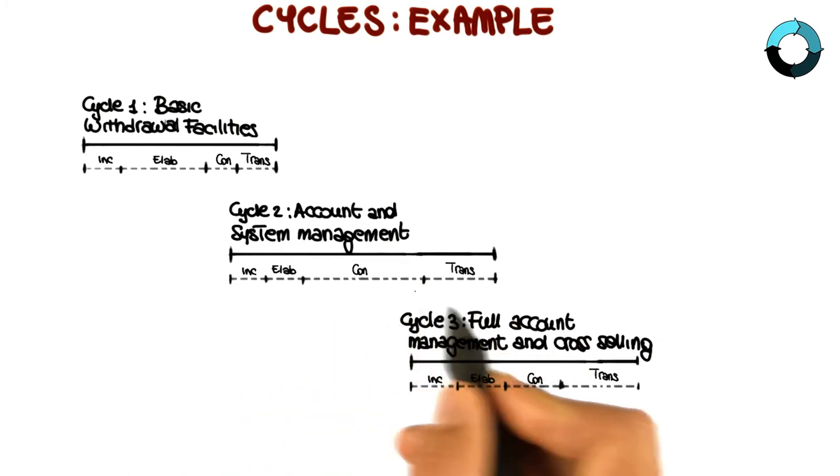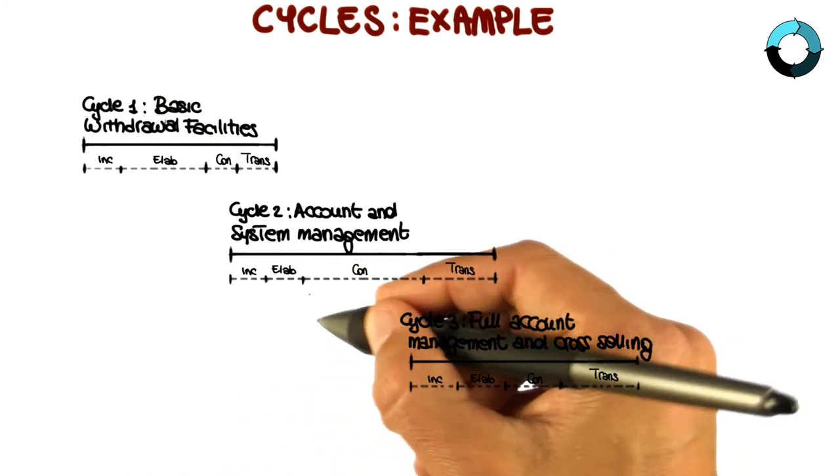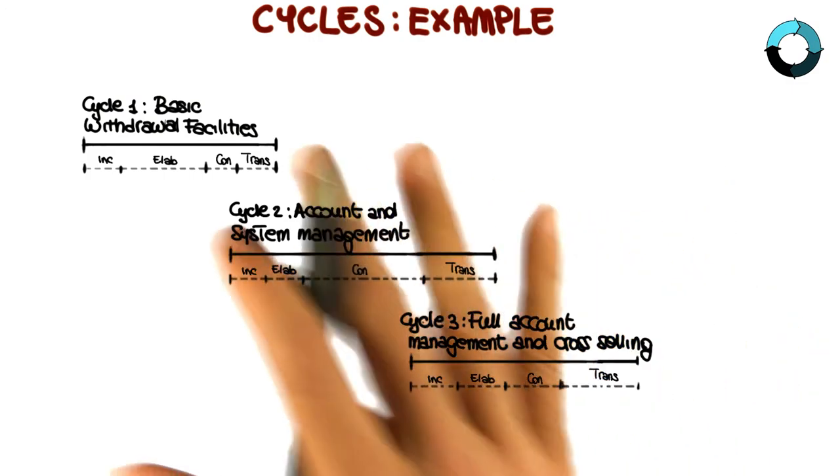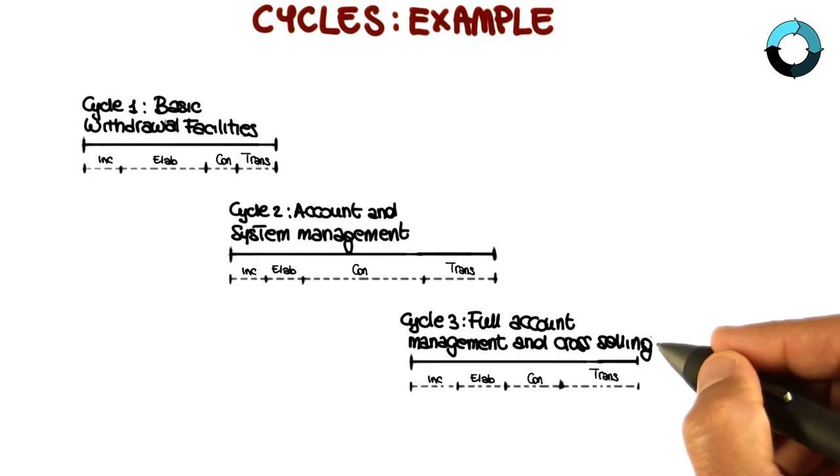And finally, I want to stress that each cycle contains four phases, and each one of these phases might be further split into iterations. So that's kind of a high level view of how the whole process will work.